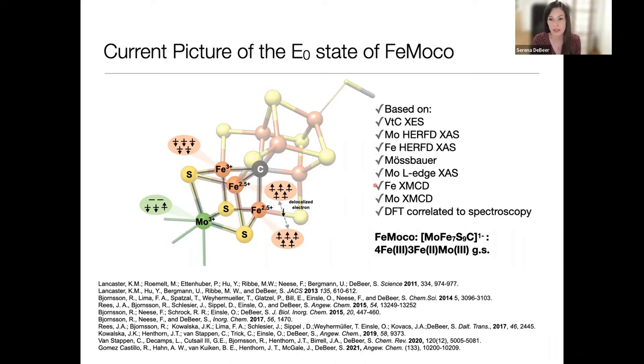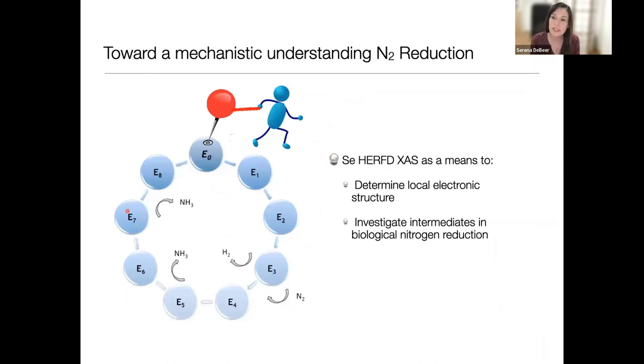We've used methods largely synchrotron-based: X-ray absorption, valence emission, X-ray magnetic circular dichroism, combined with Mössbauer and DFT. One thing we showed a few years ago is that this molybdenum has an unusual molybdenum-3 configuration, and XMCD was utilized to support this unusual non-Hund configuration that initially came only from theory. But since this time, we've really wanted to focus on how do you go beyond the ground state. Part of the problem with going beyond the ground state is the large number of irons - we kind of lose selectivity.